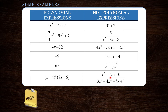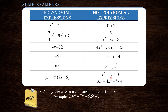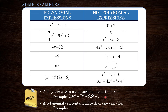Now, a couple of notes. It is possible to have polynomials that use variables other than x. For example, here is a polynomial expression that uses t instead of x. Furthermore, a polynomial can actually contain more than one variable — here's an example of one of those: a polynomial expression that has both x and t in it.